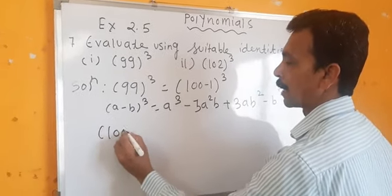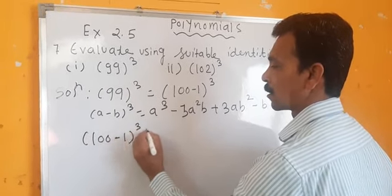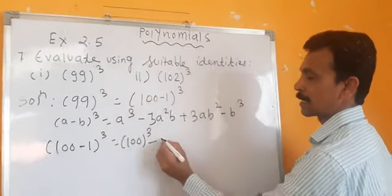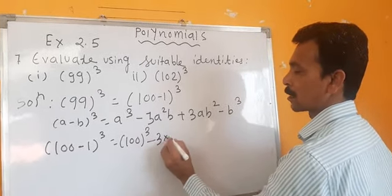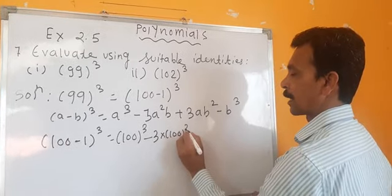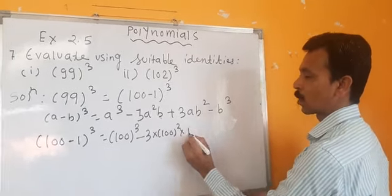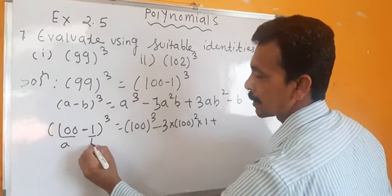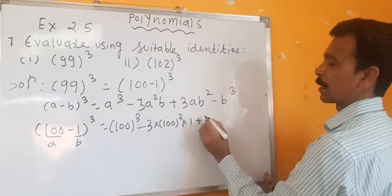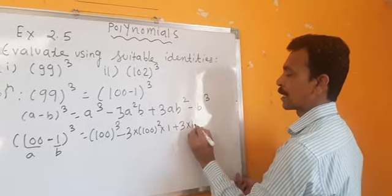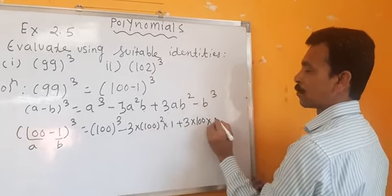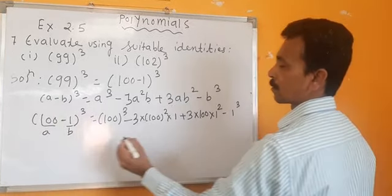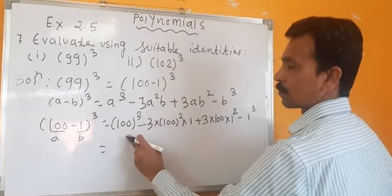A is 100 and B is 1. So A cube means 100 cube, minus 3A squared B means 3 into 100 squared into 1, plus 3AB squared means 3 into 100 into 1 squared, minus B cube means 1 cube, which is 1.